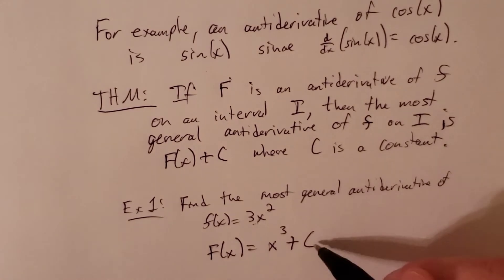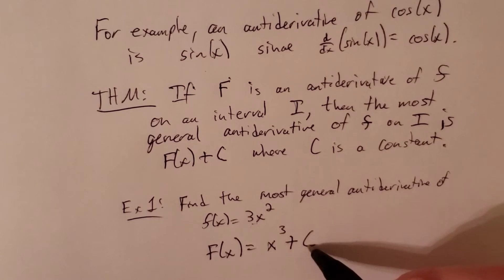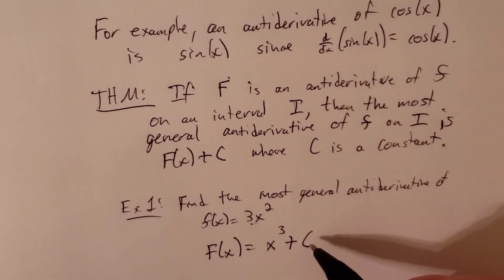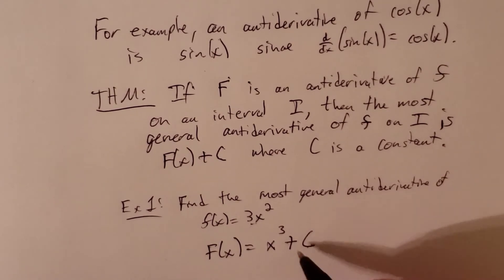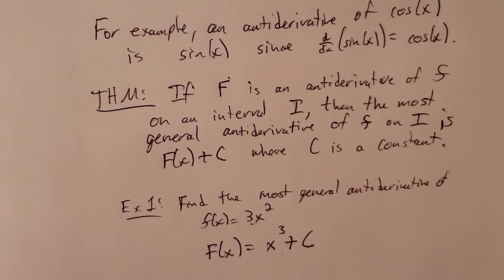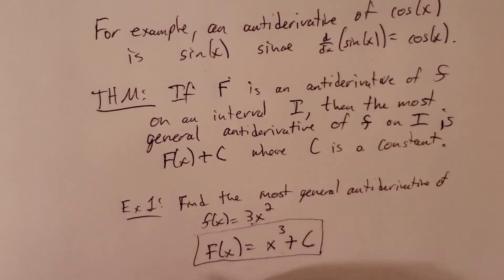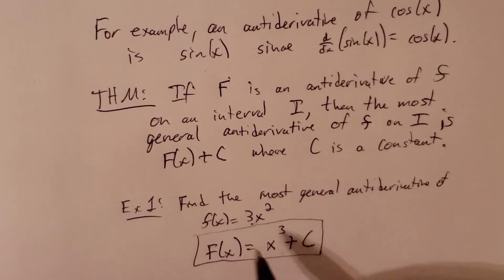But our most general form just says to add a constant c. Why do we do that? Well, no matter what this constant is, the derivative of x cubed plus c is 3x squared, because the derivative of c goes to 0. So anytime we take an antiderivative, we need to add plus some constant at the end. So x cubed plus c is our most general antiderivative of 3x squared.